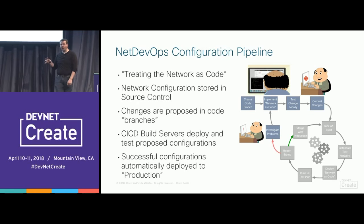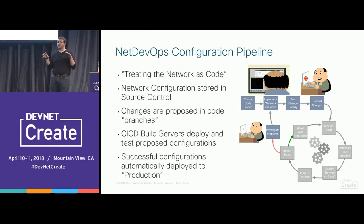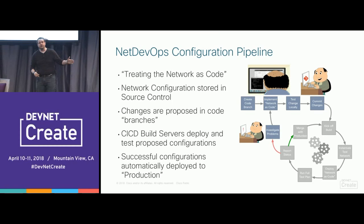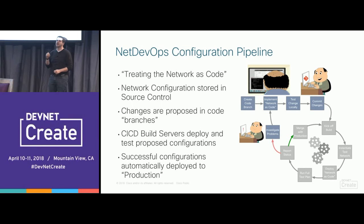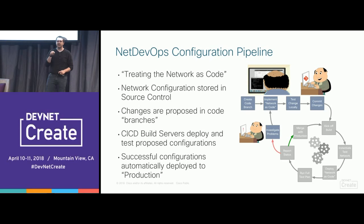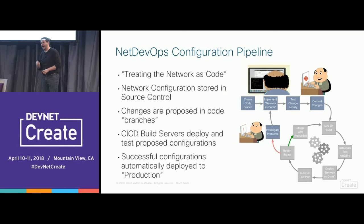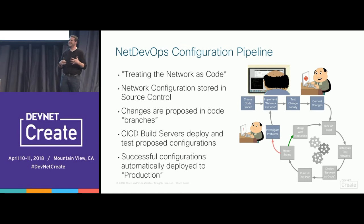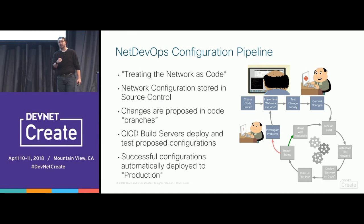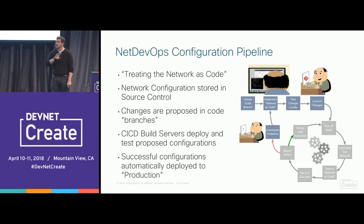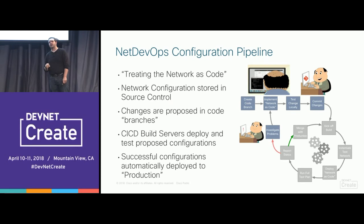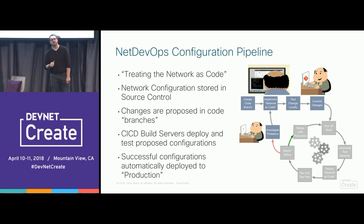Build servers will spawn a test network onto which we can actually deploy the proposed configuration — not production, a test network. We then run a full suite of network tests to make sure the network is actually running successfully. And I mean more than just a ping test — we have to test that applications, network functions, routing protocols, and features we've turned on are working as expected. If that's all successful, we stage for a production deployment, or go all the way and push it into production. We don't need to wait until 3 a.m. Saturday five weeks from now.